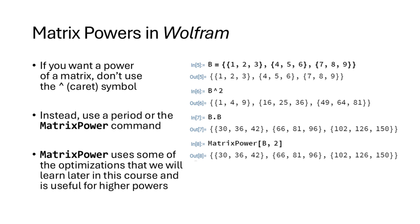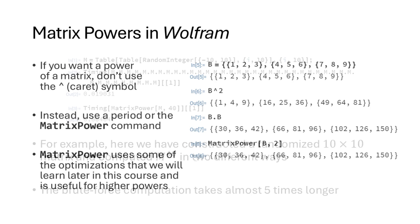We can also compute matrix powers using technology. On the calculator we can use the regular exponent symbol. In Wolfram, however, we can't use the exponent symbol — if we try, it just squares each individual entry, which is not what we want. Instead, we write B dot B, where the period symbol is used to multiply matrices in Wolfram. We can also use the matrix power command, which is convenient for computing high powers.